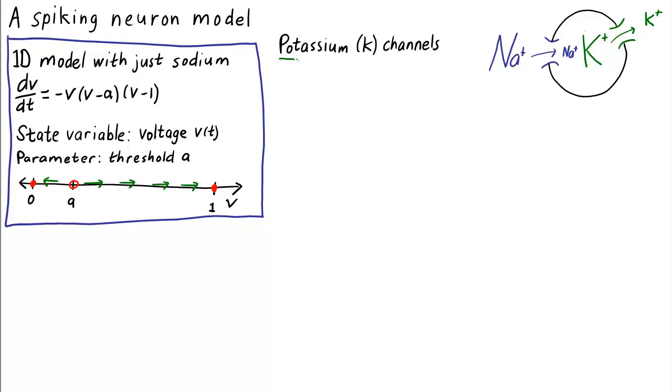We'll add a variable that represents the state of potassium channels. Since the concentration of potassium is higher inside the cell than outside, when the potassium channels open, potassium rushes out of the cell and the voltage inside goes down.